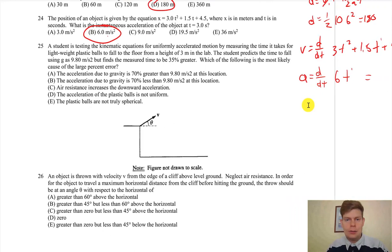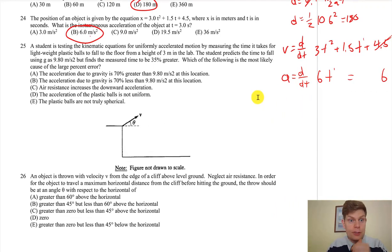Alright, a student is testing the kinematics equations for uniformly accelerated motion by measuring the time it takes for a lightweight plastic ball to fall to the floor. Anyway, the student predicts the time to fall using g is 9.8 meters per second squared, but they find the measured time to be longer. I mean, you're dropping ping pong balls or something. What's probably causing—the air.